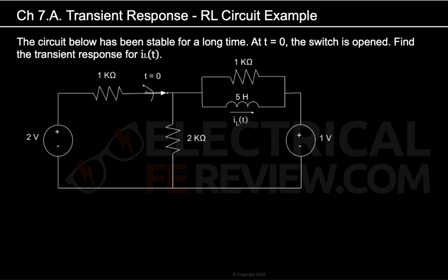That means that since we have a switch, marked by an arrow, the switch has been closed before t equals 0. At t equals 0, this switch is going to be opened, and this part of the system on the left side will be completely disconnected from the right part. So at t equals 0, the switch will be opened, and at t less than 0, the switch has been closed for a very long time — that's what it means by it has been stable.